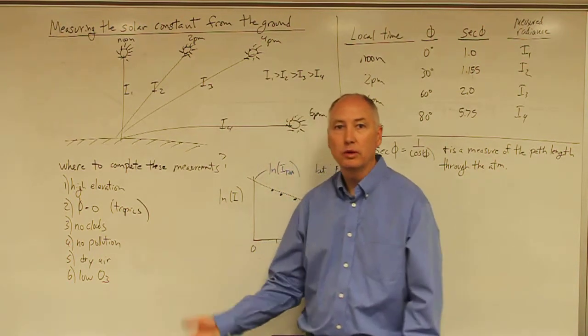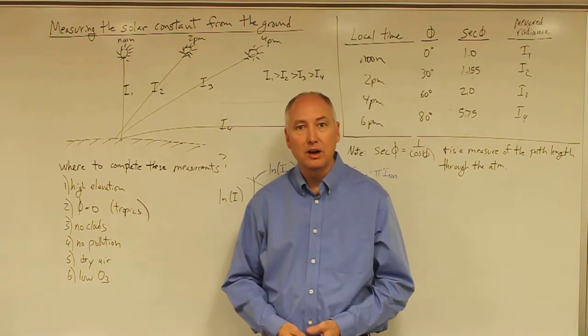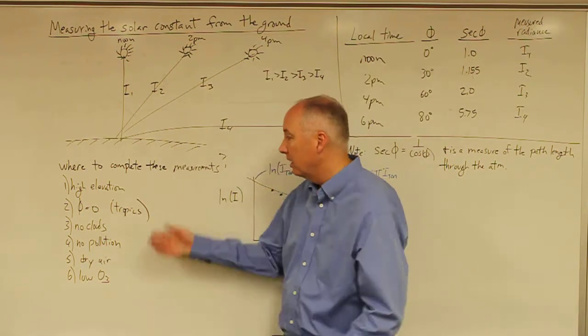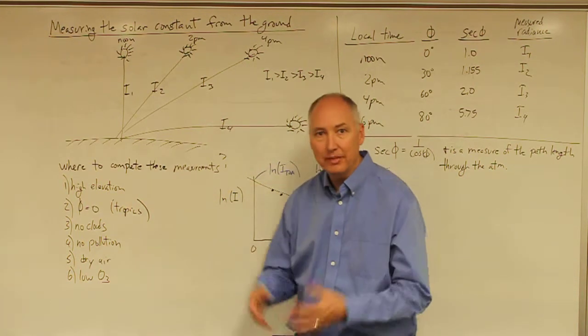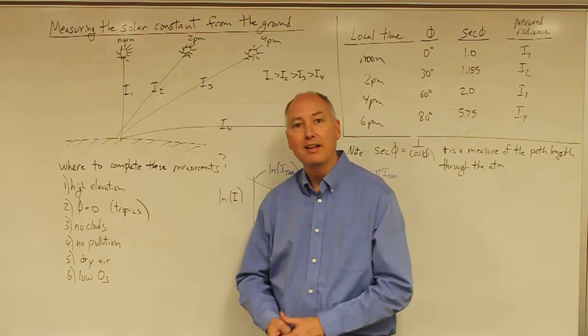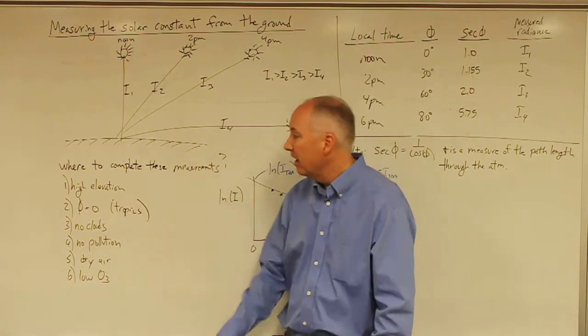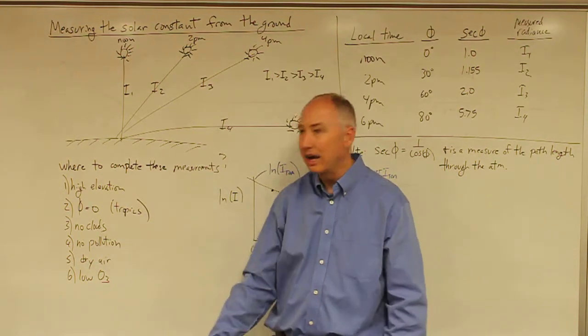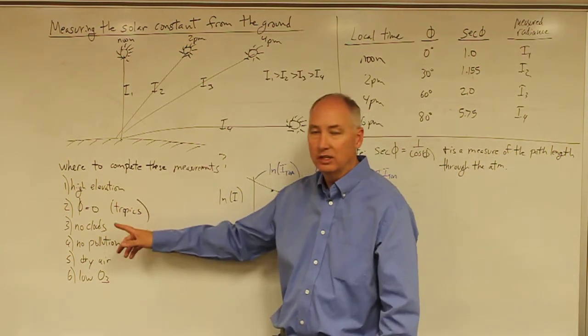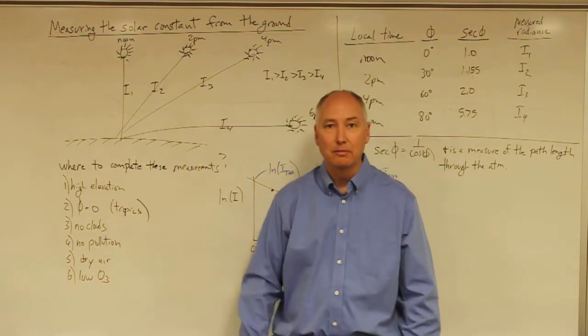And as it turns out, one of the best places to do this in the world is Mauna Loa Observatory on the Big Island of Hawaii. It is at an elevation of about 12,500 feet in the middle of the Pacific Ocean. It's well above the marine boundary layer. It's quite dry at those altitudes. And there are times of the year when you get no clouds at higher elevations, when the sun is directly overhead, and you can take these measurements very accurately from there.